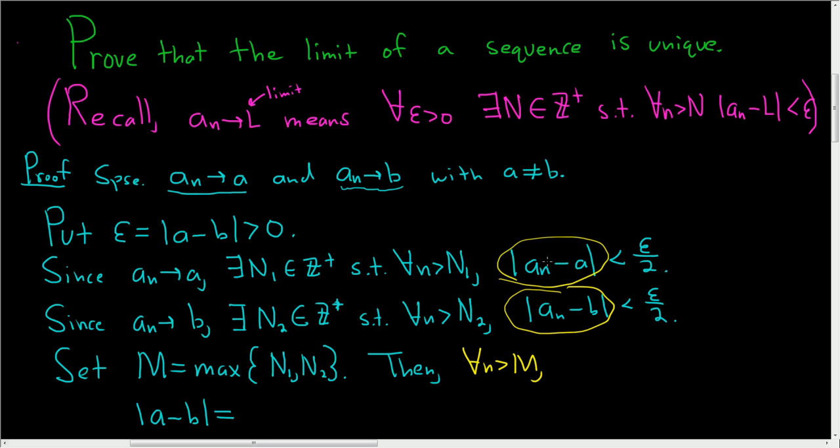So to involve these guys, what we'll do is use the triangle inequality. So we're going to add and subtract a sub n. So then a minus a sub n plus a sub n minus b. So all we did here was basically just add 0.